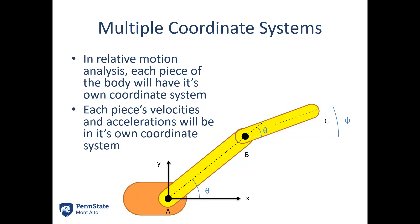Here is our robotic arm. I've got a fixed ground point at A, and then member AB can rotate about point A. We've got an elbow joint at point B, and member BC can rotate about that elbow joint at B. So I've got two lengths and two angles, theta and phi. The end point is C, which is what I'm looking at. Important in all of this: we have a coordinate system attached to each of the arm pieces. X and Y is fixed to the ground, and I've got R1 and theta1 fixed to member AB.